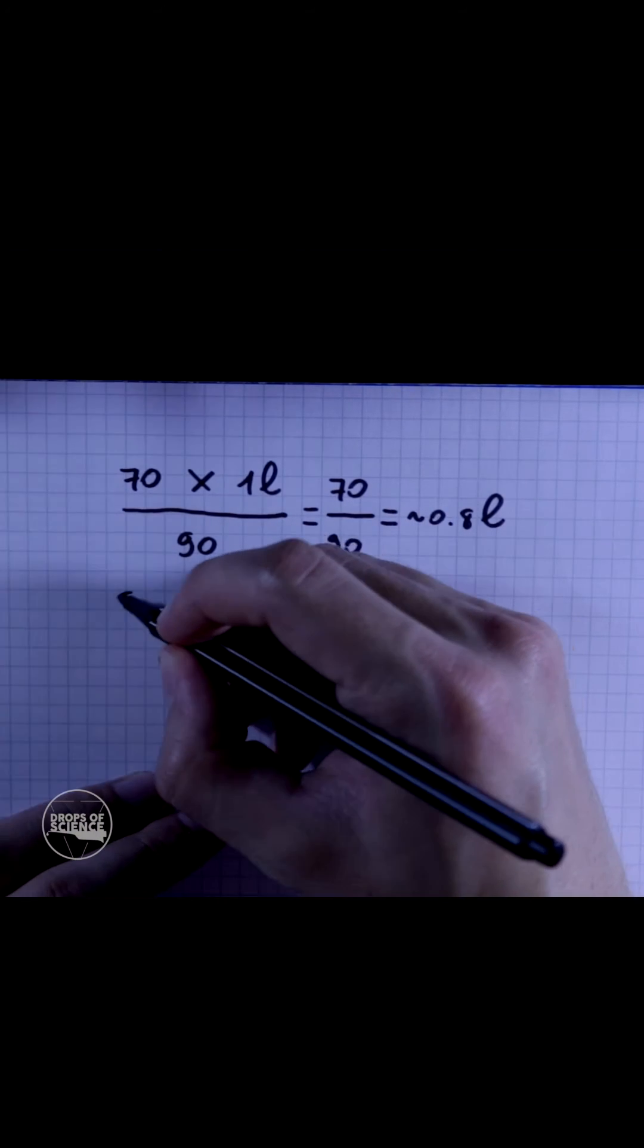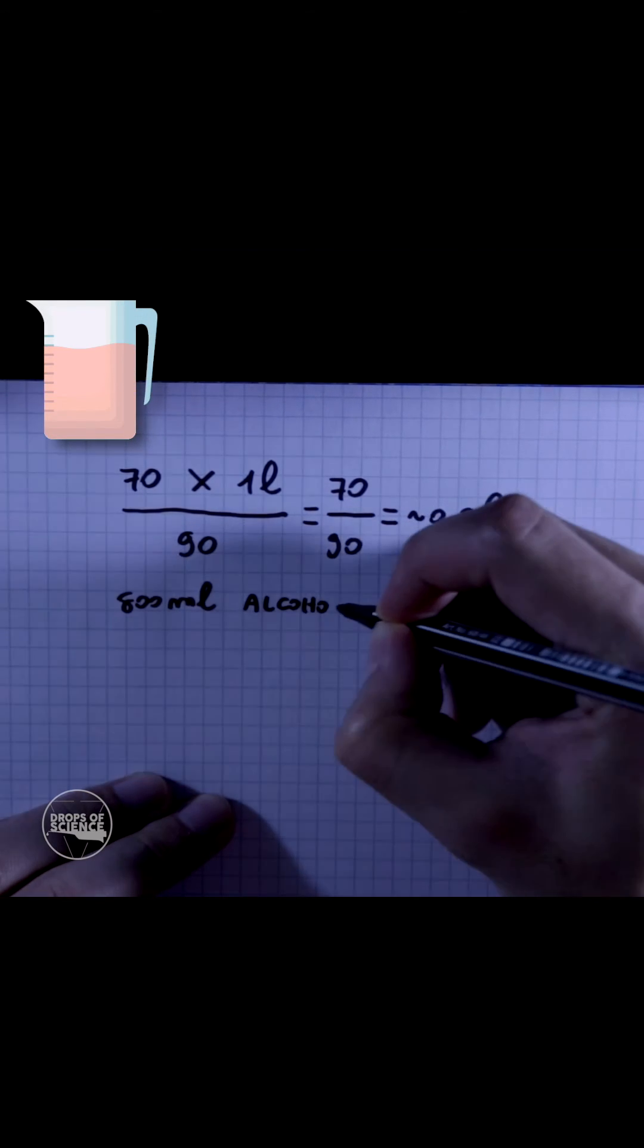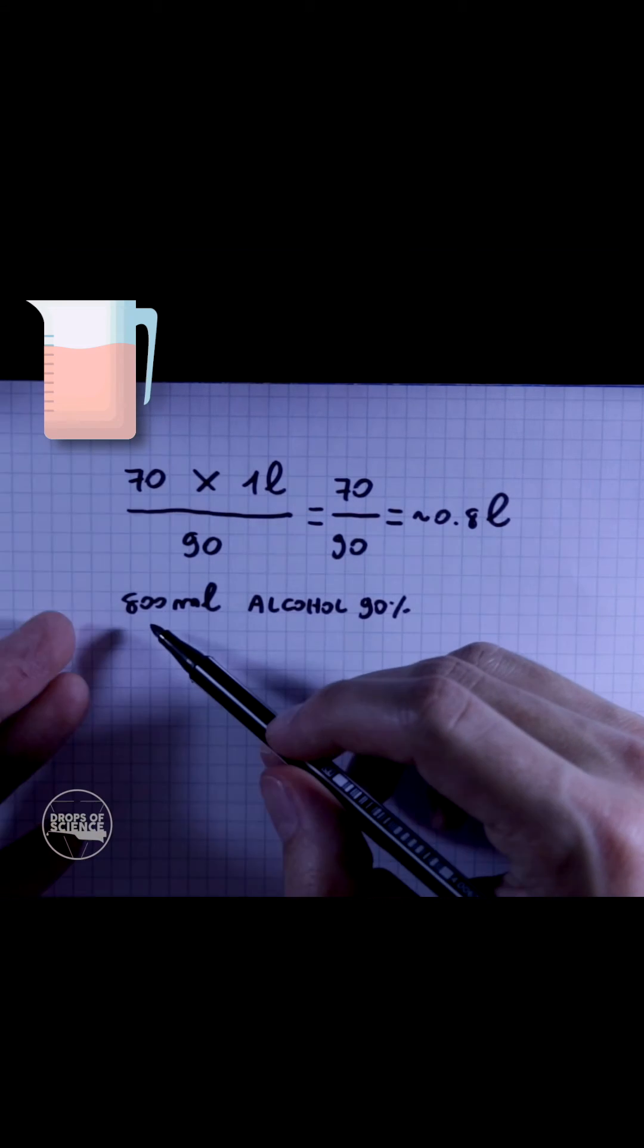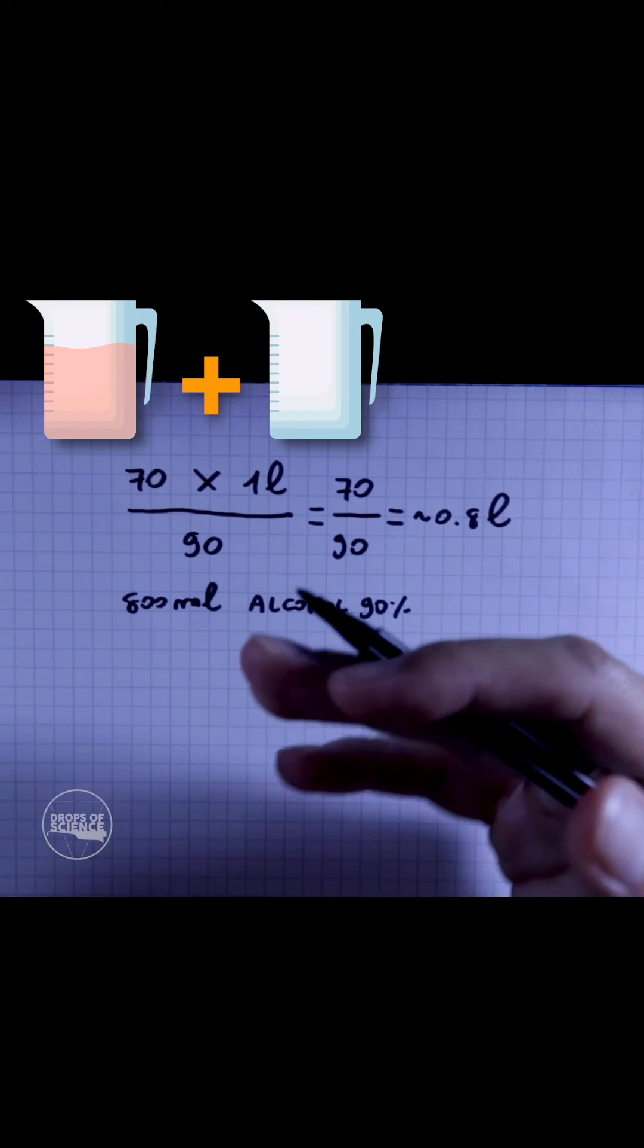0.8 liters means 800 milliliters, which would be of alcohol 90%. Since we decided to make one liter, now we have only 800 milliliters. We need to top up this volume with something, and since we are doing a dilution, we will use water.